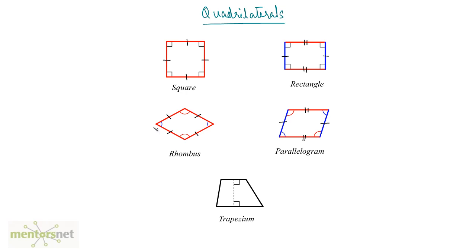The first one is a square. A square is a quadrilateral which has four sides of the same length and all of the angles are 90 degrees. A rectangle is similar to a square but in a rectangle, opposite sides are of same length and the angles are of course 90 degrees.